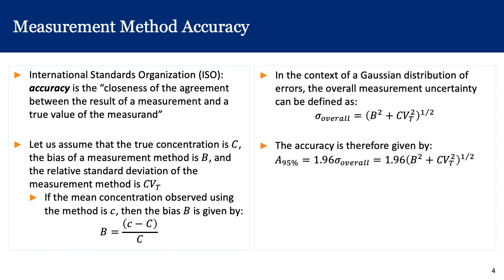Once we have defined sigma_overall, we can define an overall 95% accuracy as 1.96 times sigma_overall. The 1.96 comes from the normal distribution, where 95% of the area lies between mu minus 1.96 sigma and mu plus 1.96 sigma. So 95% accuracy equals 1.96 times the square root of B squared plus Cv_t squared.